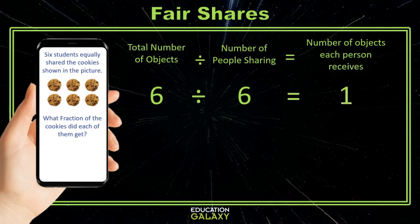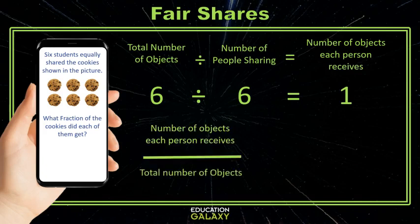To make our fraction, we use that one as our numerator and the total number of cookies as the denominator, six. Therefore, our answer is one sixth.